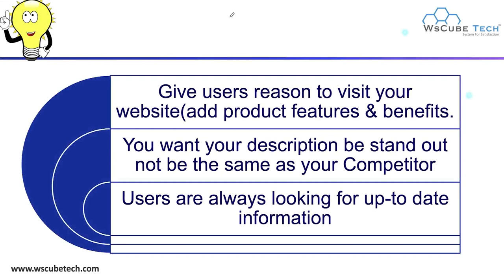Next, give users a reason to visit your website by adding your product features and content. For example, if you have an e-commerce website and you want to write a meta description for a page containing products or services, you should write the product features — what special features this product has — just to attract your visitors. You want your description to stand out. Take ideas from competitor websites to see how they write their meta descriptions, and then improve upon them.